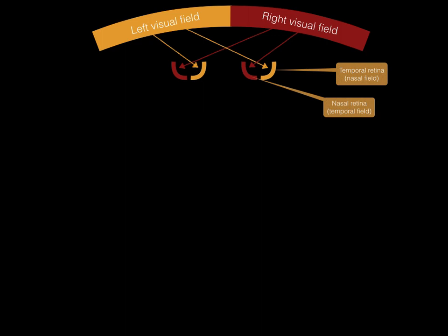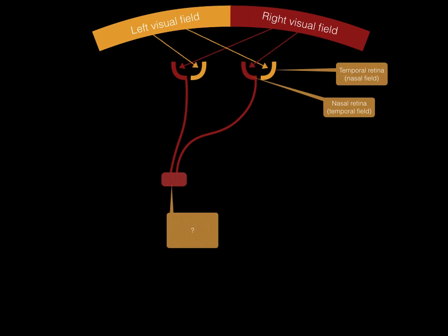Next, the fibres from the retina of the same half of each eye extend back and ultimately join on the same side of the brain. These fibres reach an important structure located in the thalamus — the lateral geniculate nucleus, or LGN. You can see fibres from the nasal retina of each eye decussate, or cross, to the other side of the brain.